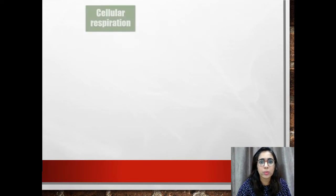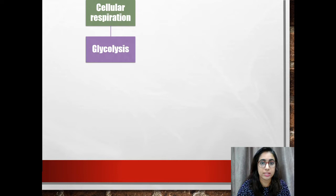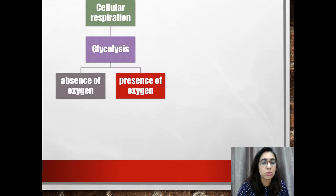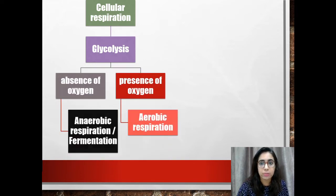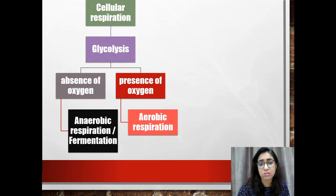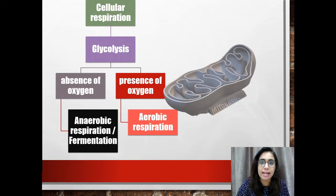Cellular respiration always starts with glycolysis in the cytoplasm. From there, the two pathways are determined by the presence of oxygen. If there's no oxygen available, anaerobic respiration will take place, but it is not very good at making ATP — it relies on only the two ATP made from glycolysis. But if oxygen is available, aerobic respiration will occur in the mitochondria, and it's an ATP-producing machine — a lot of ATP will be produced.